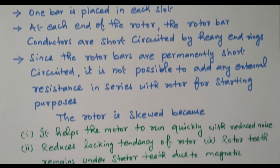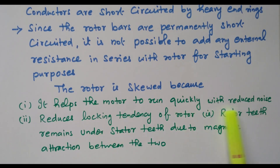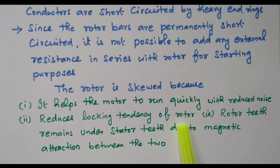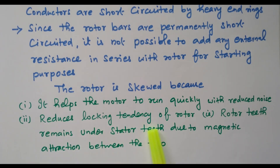The rotor is skewed — not a straight line — for two main reasons. First, it helps the motor to run quietly with reduced noise. Second, it reduces the locking tendency of the rotor. If the conductors were placed in a straight line, there would be a possibility of locking between the stator and rotor teeth due to magnetic attraction. Skewing introduces a phase difference between stator and rotor, thus avoiding this locking tendency.